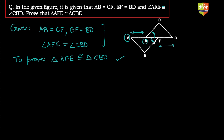If AFE and CBD were congruent, one angle is already given as equal. The two arms of that angle must be equal: EF equal to BD — yes, that's already given. And AF equal to CB — this is not directly given, so we need to prove it. What is given is AB equal to CF.